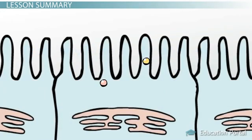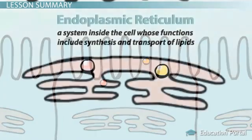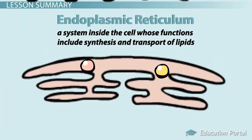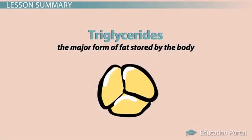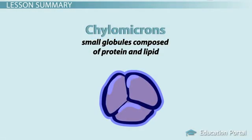These small units are able to pass through the intestinal mucosa and enter the epithelial cells of the small intestine. Once inside the cells, they enter the endoplasmic reticulum, which is a system inside the cell whose functions include synthesis and transport of lipids. Here, the digested products are re-synthesized into triglycerides, which are the major form of fat stored by the body. Before the triglyceride leaves the cell, it gets a protein coating and becomes a chylomicron.